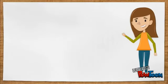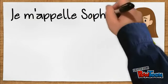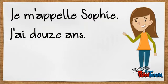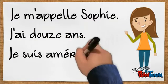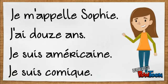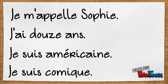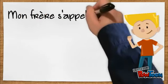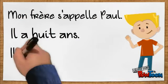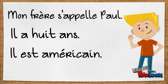For yourself, you need to include a sentence stating your name, a sentence stating your age, a sentence stating your nationality, and a sentence stating one trait about yourself. I have included some adjectives to describe traits in the instructions. You will then need to include the same information for the other four family members, but now you will be saying il or elle instead of je.